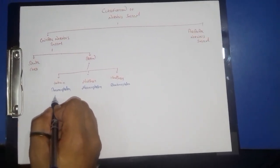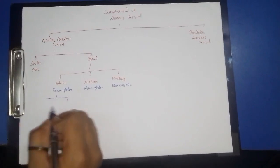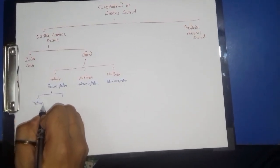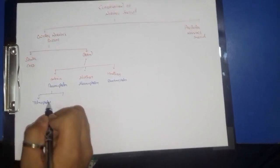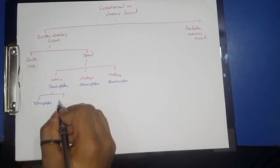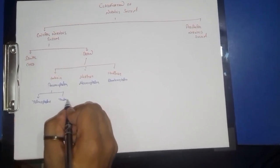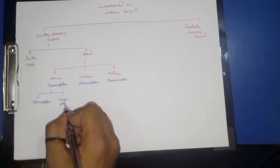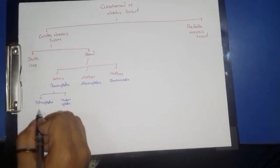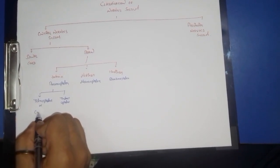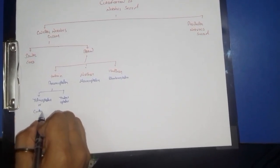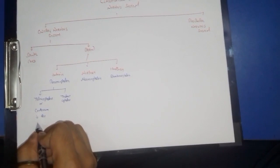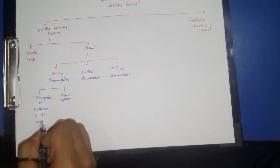The forebrain is further divided into two parts: the telencephalon and the thalamencephalon. The telencephalon, also known as the cerebrum, is the largest part of the brain.